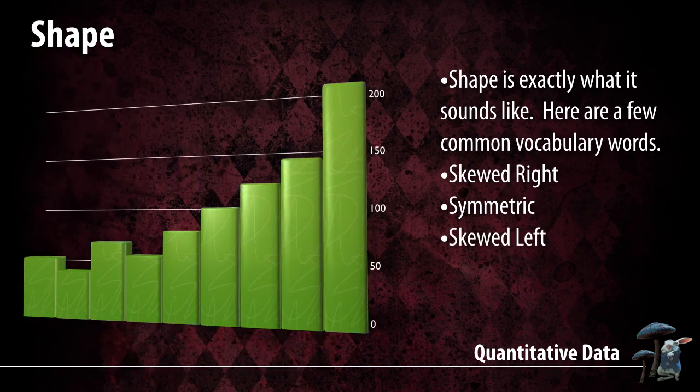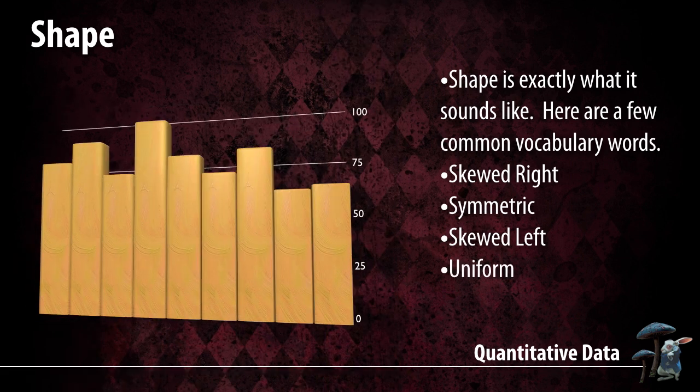Skewed left is the opposite of skewed right — the tail trails off to the left side, giving you a skewed left graph. The last shape is uniform, where all of the bars are about the same height. So if this were still the same question about hours of TV watched, everyone would have roughly the same response — some a little more, some a little less — but essentially the bars go across at the same height. That's what we call uniform.